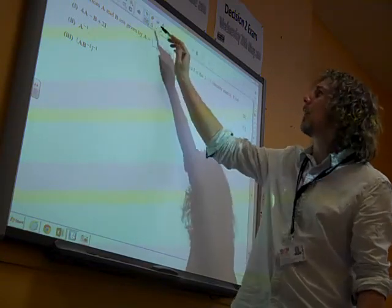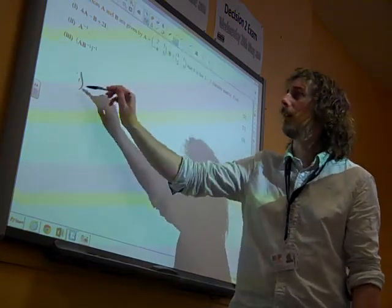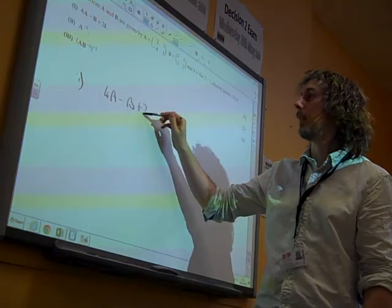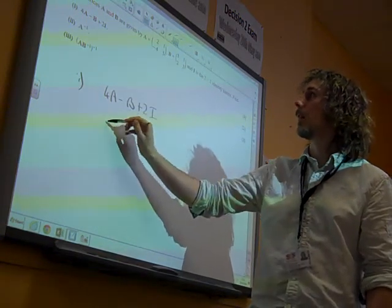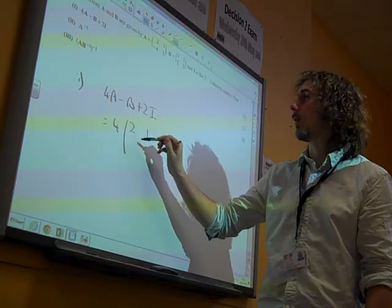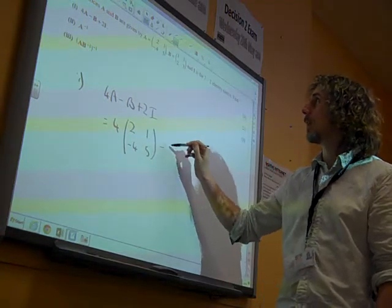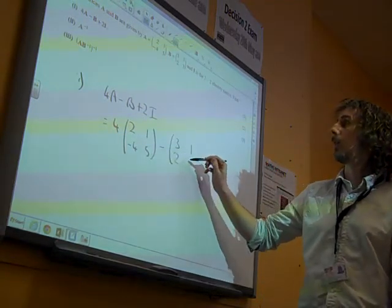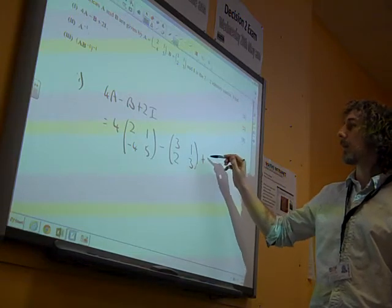This appears, the only place that this went wrong for anybody was in that whole thing of adding numbers and stuff. So 4 times 2, 1 minus 4, 5, minus 3, 1, 2, 3, plus 2 times I.